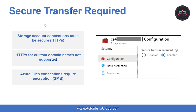The last topic is secure transfer required. You can configure your storage account to accept requests from secure connections only by setting the secure transfer required property. When you require secure transfer, any requests originating from an insecure connection are rejected. Microsoft recommends always requiring secure transfer for all storage accounts. When secure transfer is required, calls to the Azure storage REST API must be made over HTTPS, and any request made over HTTP is rejected. By default, this property is enabled when you create a storage account. Note that Azure storage doesn't support HTTPS for custom domain names, so this option does not apply when using a custom domain name.